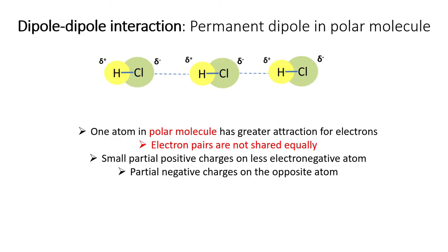Moving on to the second intermolecular force, dipole-dipole interaction, which is a permanent dipole occurring in polar molecules. For example, HCl is a polar molecule because there is a difference in electronegativity between the chlorine and hydrogen atoms. Therefore, the more electronegative chlorine atom attracts the shared electron pair more towards itself, causing negative charges, while the less electronegative hydrogen atom is positively charged.